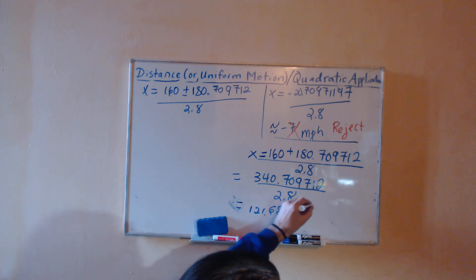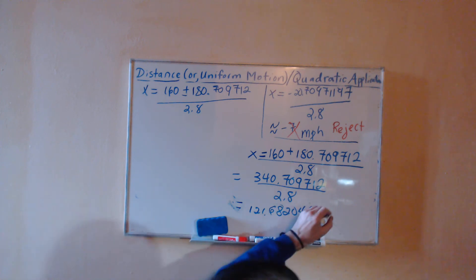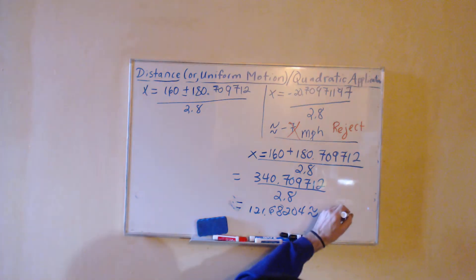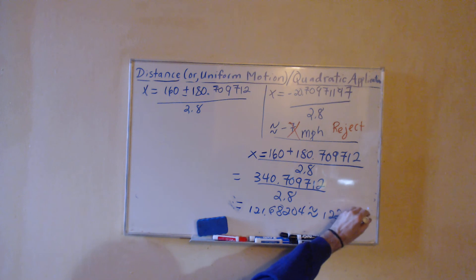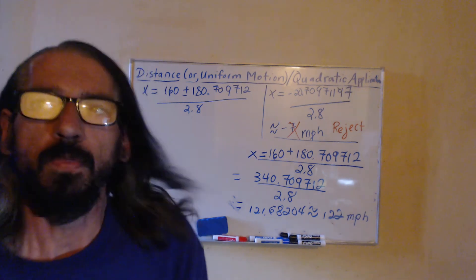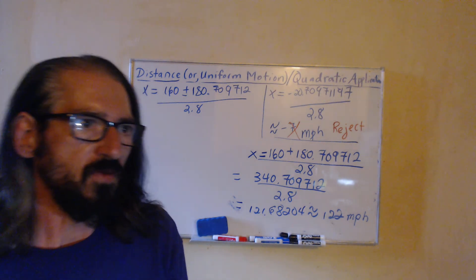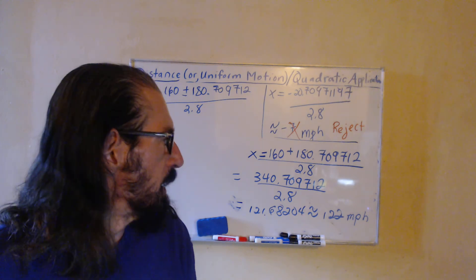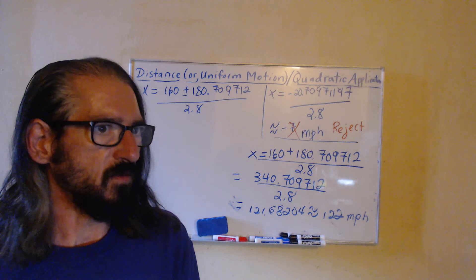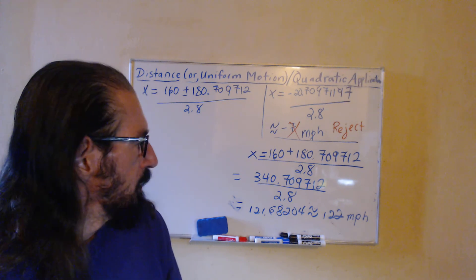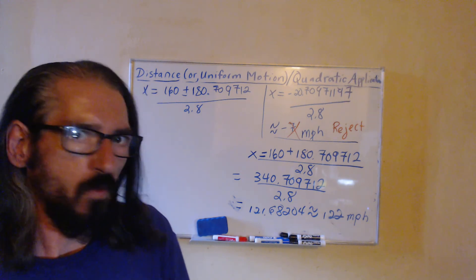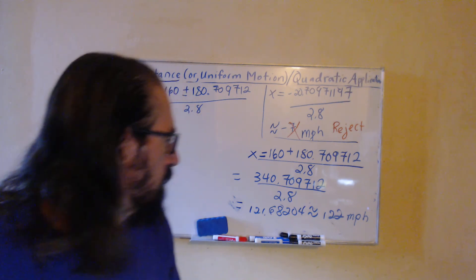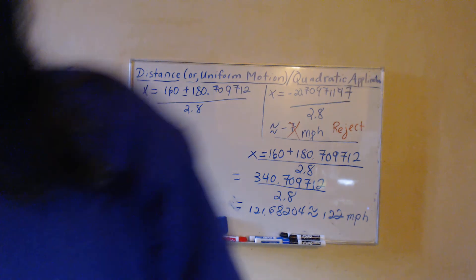Which to the nearest mile per hour would be 122, and we do need that label of 122 miles per hour. If you think about it, we've got passenger jets that go 350, 500 miles per hour, and military jets going beyond that. So for a single engine private airplane doing a little over 100 miles per hour, that kind of makes sense.